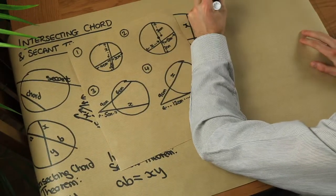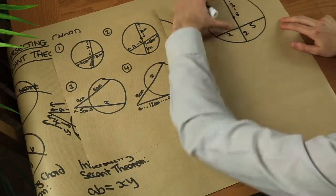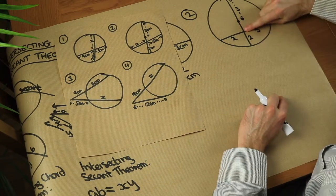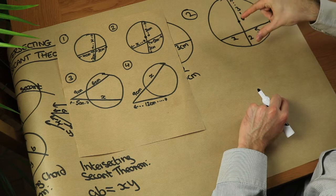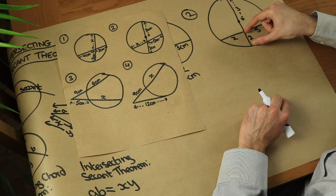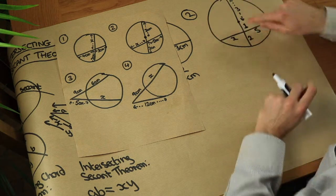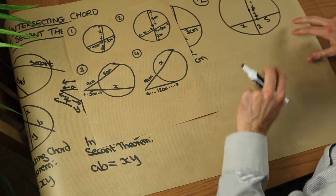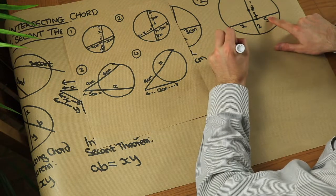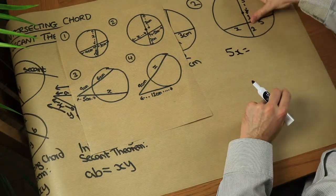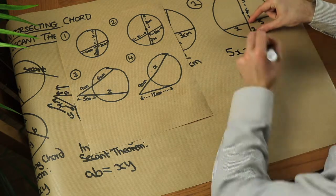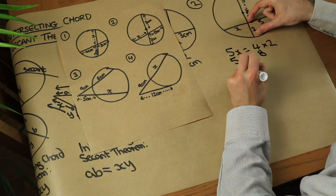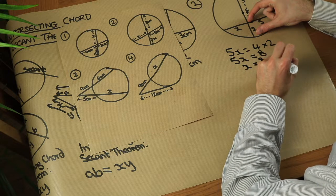Now this one's slightly harder. This time we're not given the length of this part of the chord here, but we are given the radius. Now we could work out what that length is here, because if that's the radius of 3 like this, then that radius the other side must also be 3. And if that is 2, that means this length here must be 1, just from here to here, and then we can use the intersecting chord theorem as before. So we've got x times 5, so 5x, is equal to this length here, which is 4 times the 2. So that means 5x is equal to 8, and that means x is 8 over 5, or 1.6.